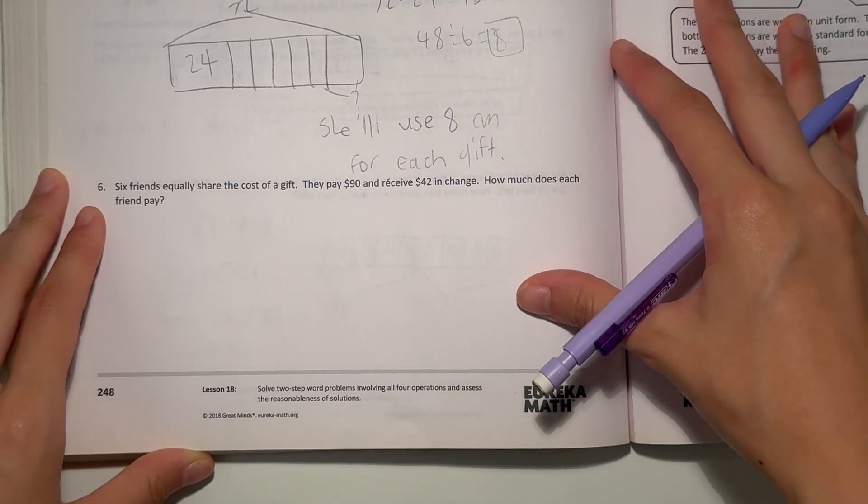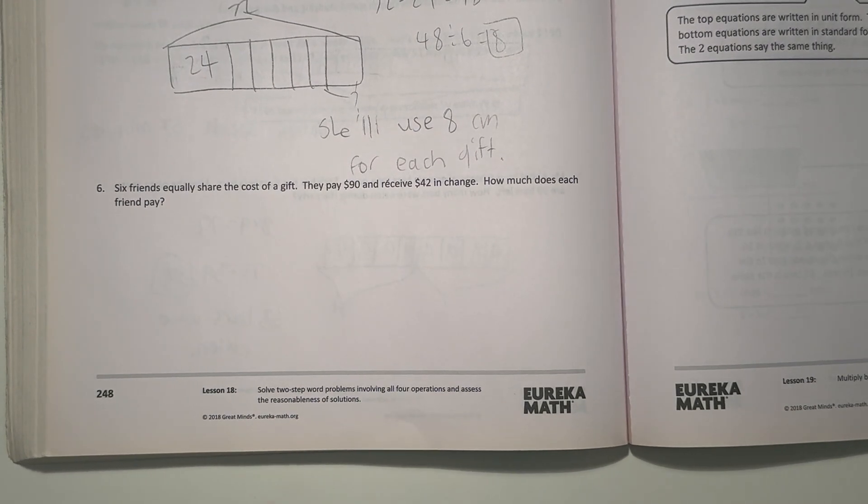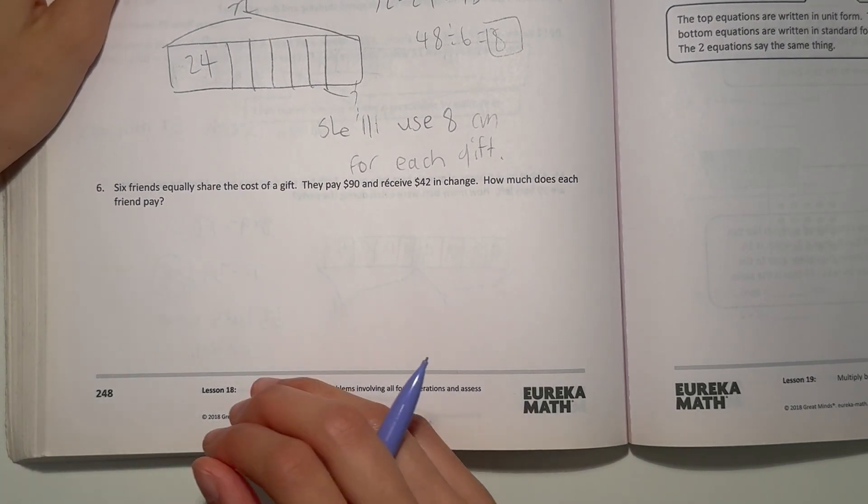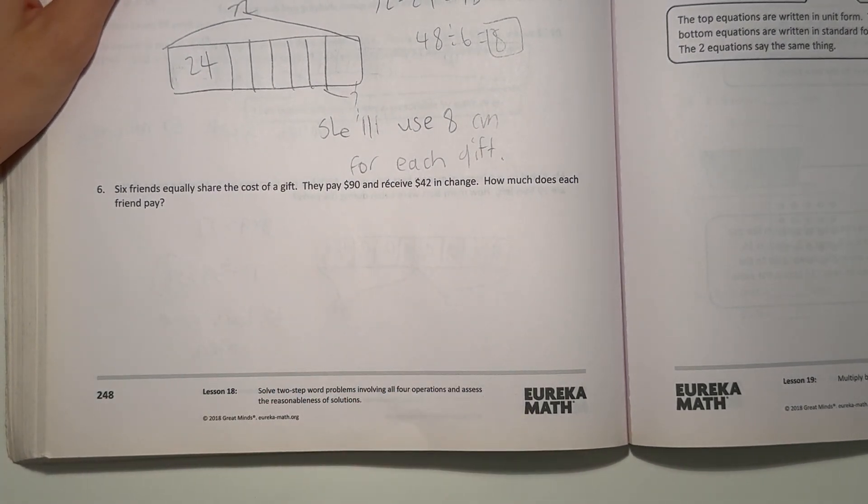And number 6. 6 friends equally share the cost of a gift. They each pay $90 and receive $42 and change. How much does each friend pay?